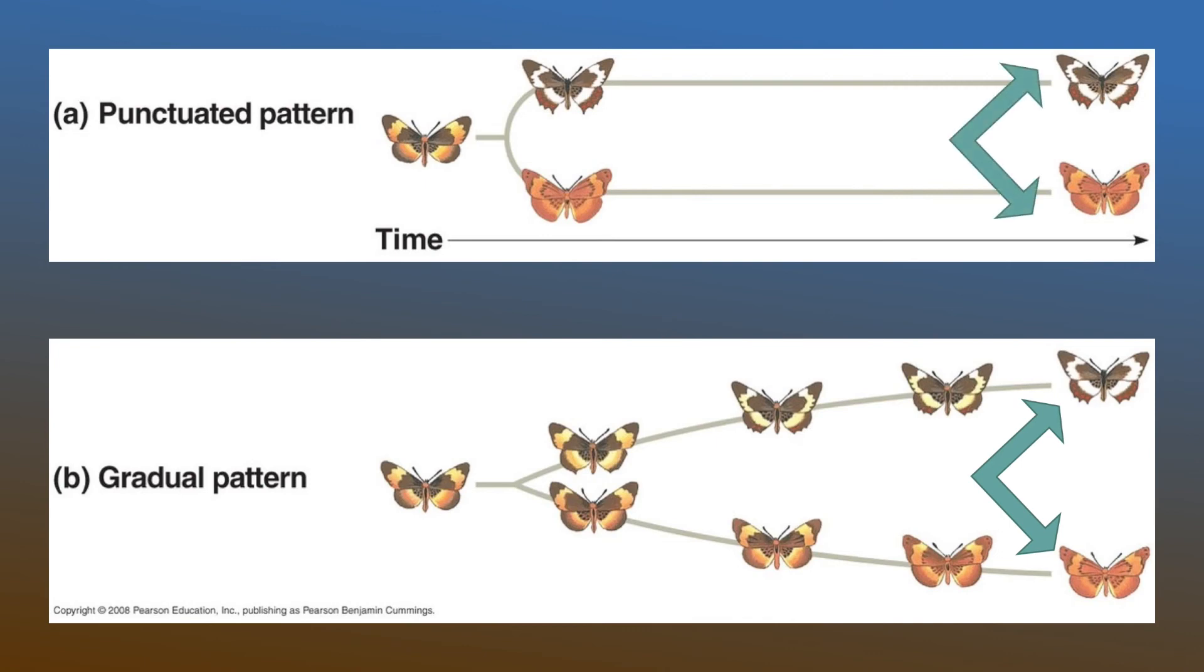Now you'll notice that the species on the punctuated pattern and the gradual pattern are the same in the end. The real difference relates to time, because for punctuated equilibria it'll be sudden change whereas for gradualism it could be millions of years before that sort of change can occur. But keep in mind that for punctuated equilibria that sudden change will occur and then after that no real changes or very minimal changes will happen to that species.